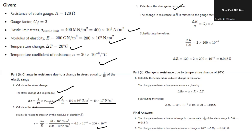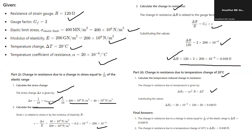Calculate the change in resistance delta R using: gauge factor × epsilon = delta R / R. With R = 120 ohms, the gauge factor and epsilon value are already provided. Calculate delta R separately from this formula. For the change in resistance due to a temperature change of 20°C, use delta RT = alpha × R × delta T, giving approximately 0.048 ohms. The final answers: change in resistance due to stress (1/10th of elastic limit) = 0.048 ohms; change in resistance due to 20°C temperature change = 0.048 ohms.